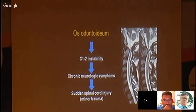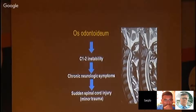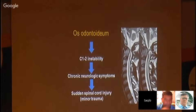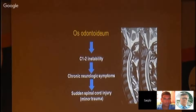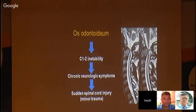What happens then? Because the process is not connected with the axis body, there is significant instability at C1-C2. This causes, over time, chronic neurologic symptoms and sometimes sudden spinal cord injury with minor trauma. Patients may come to you after a small fall with severe tetraparesis, and you look at the film and see what appears to be rupture of the odontoid. You might assume it is an odontoid fracture, but this is actually a very common scenario — it is in fact an undiagnosed os odontoideum which has caused a neurologic deficit after minor trauma.